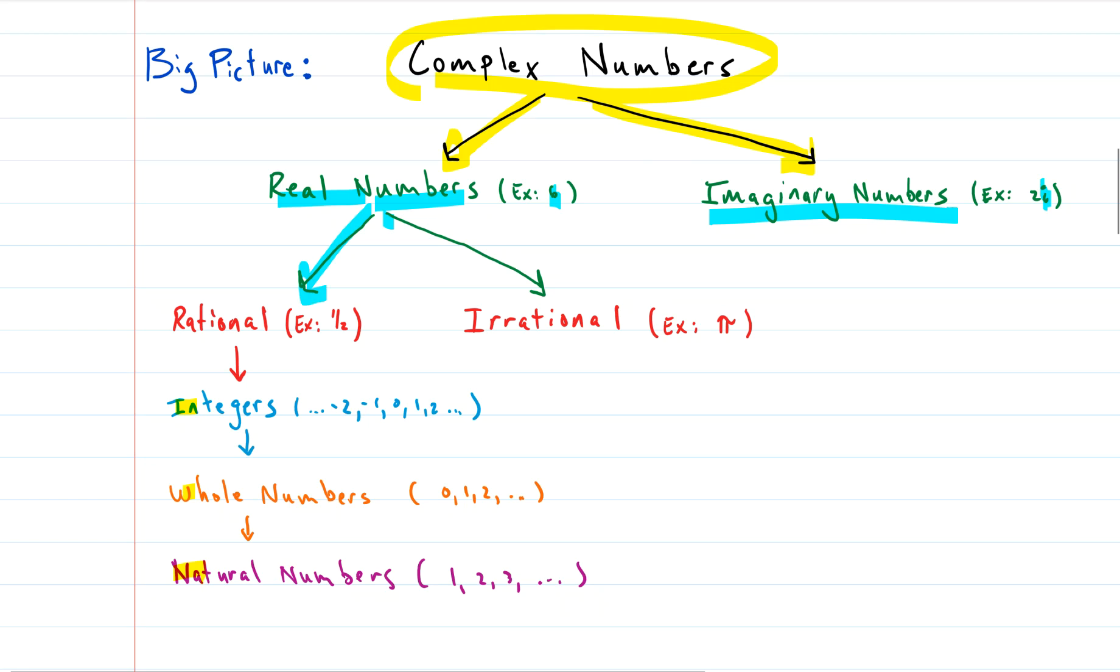Into rational and irrational. Irrational numbers are numbers like pi. Rational numbers are numbers that can be written as a fraction of two integers.